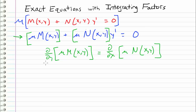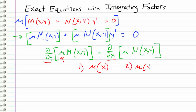Now in order to apply these differentiation operators, we need to determine what μ is a function of. There are going to be two cases: we're going to consider the case where μ is a function of x, and the case where μ is a function of y. For simplicity, we do not want μ to be a function of both x and y — we want it to be either one or the other, which will make our computations much easier. So for Case 1, we assume μ is a function of x.